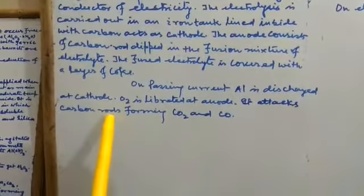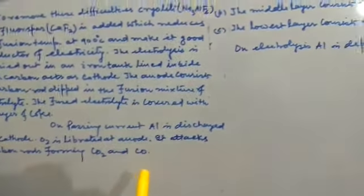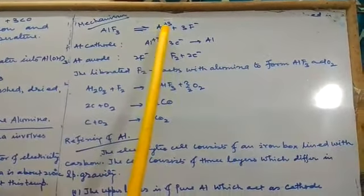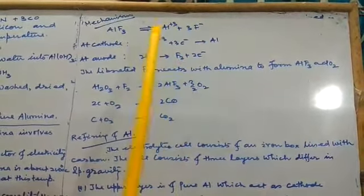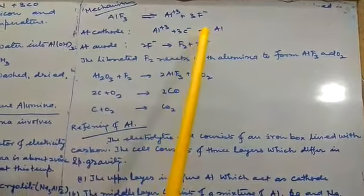It attacks carbon rods forming carbon dioxide and carbon monoxide. Now mechanism: AlF3 dissociates into Al³⁺ plus 3F⁻. At cathode, Al³⁺ plus 3 electrons gives Al.